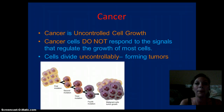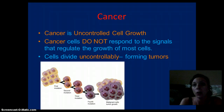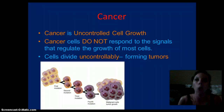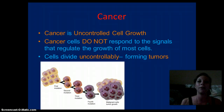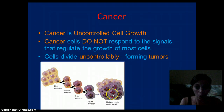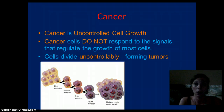Cancer is the uncontrolled cell growth. What happens with cancer is that the cells do not respond to the signals that regulate the growth of most cells, so there's no signal for the cells to stop growing or dividing. The cells divide uncontrollably and form tumors. There are two different types of tumors: benign, which is not cancerous, and malignant, which is cancerous. Malignant tumors can spread, and these cells will continue to grow and divide until treatment or, unfortunately, it causes death.